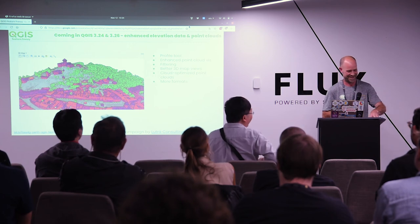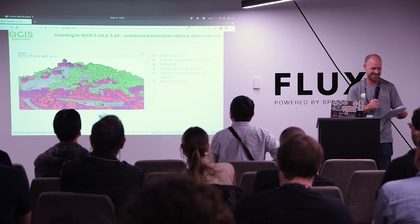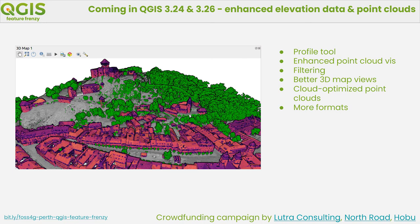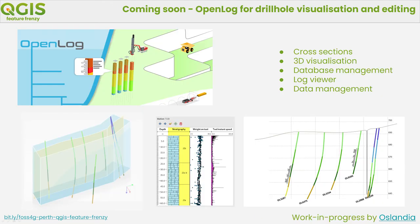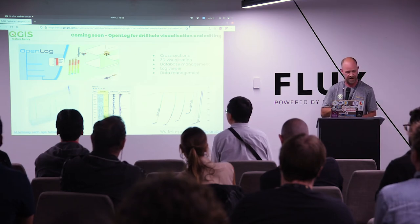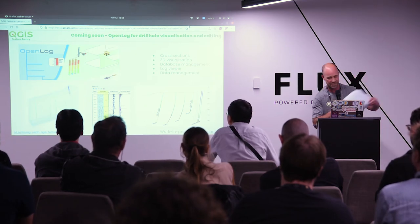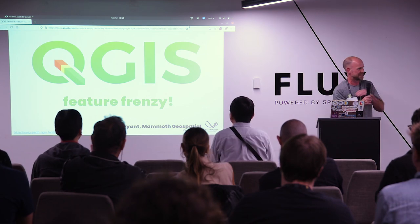Much work is being done on additional enhancements to QGIS, such as a crowdfunding campaign to build on QGIS's expanding 3D and point cloud capabilities. Coming soon: OpenLog for drill hole visualization and editing, which is relevant to the Perth community. Credit to Perth's very own Grant Boxer, who provided a lot of the energy and input that got this project started. QGIS Feature Frenzy — done. Thank you very much.